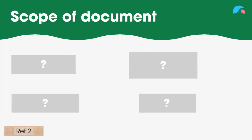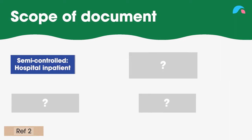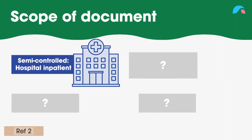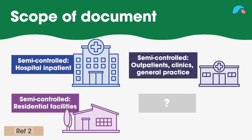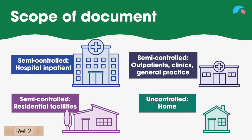The document was developed to assist clinicians in applying aseptic technique across a range of settings. Four main settings are included: semicontrolled, which incorporates hospital inpatient services; semicontrolled, which involves outpatients, clinics, and general practice; another semicontrolled environment covering residential facilities; and uncontrolled, focusing on the home environment.